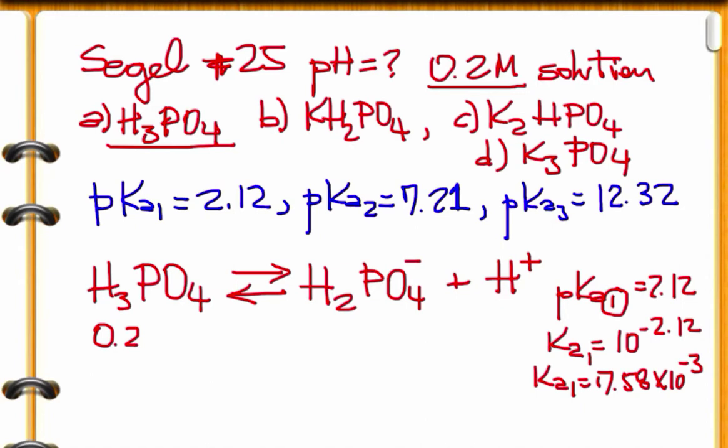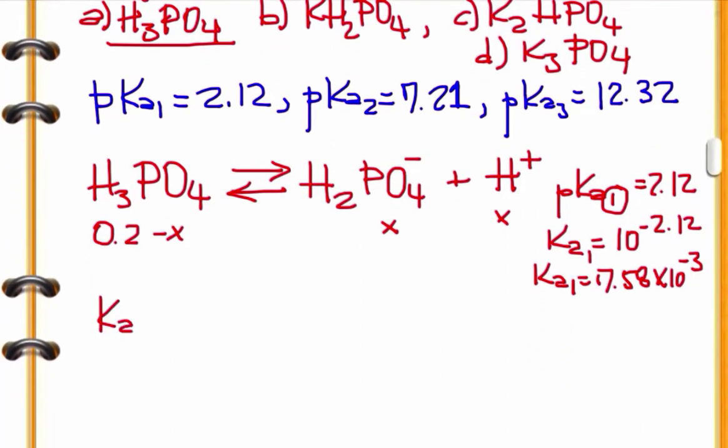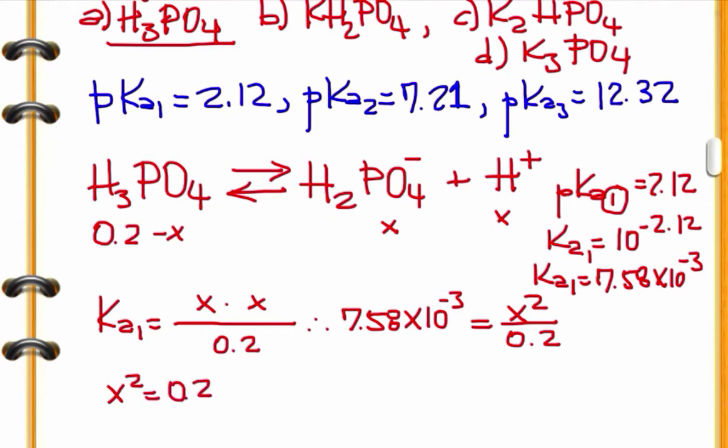And the concentration is 0.2 molar. So 0.2 minus X is going to be dissociating to X and X. Well, I'm going to make it simple here. I'm not going to put 0.2 minus X. I'm going to just use the approximation. So Ka1 is going to be equal to X squared. Technically speaking, you should put 0.2 minus X and solve the quadratic equation there. But let's make it simple now. And put 7.58 times 10 to the power of minus 3 equals X squared divided by 0.2. Therefore, you can calculate the X from here.